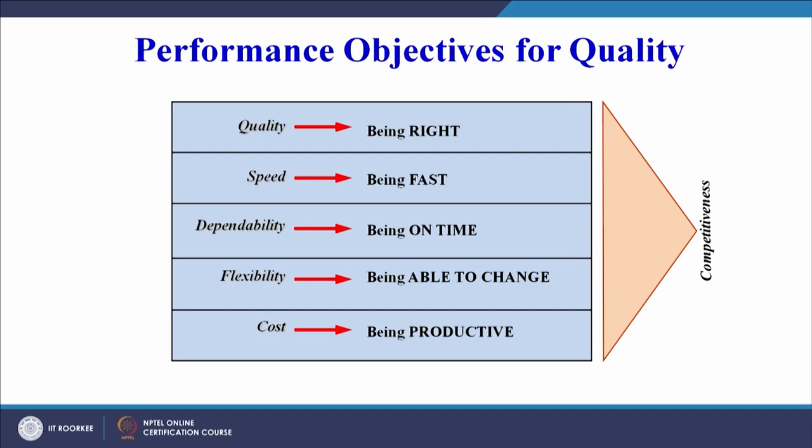Quality is inversely proportional to variation. This means if variations in the product performance are large, quality is less, and if variations are less, quality is more. The performance objectives for quality show that quality is about being right, speed is being fast, dependability is being on time, flexibility is being able to change, and cost is being productive — all of which lead to competitiveness. We have to be right the very first time for our processes to be of good quality.